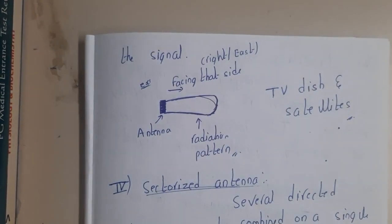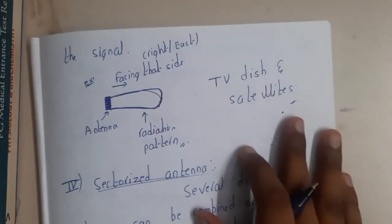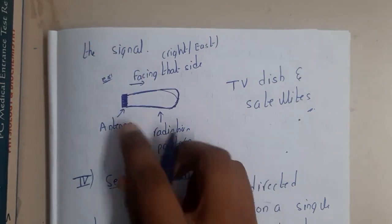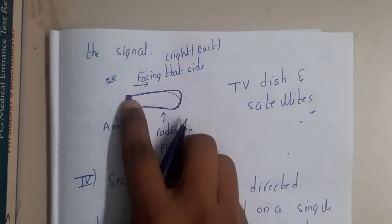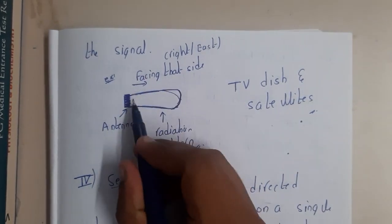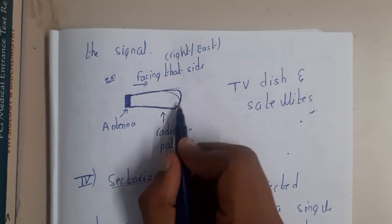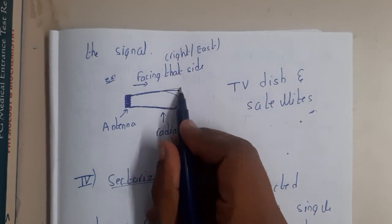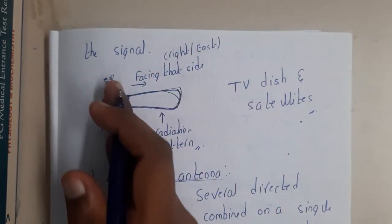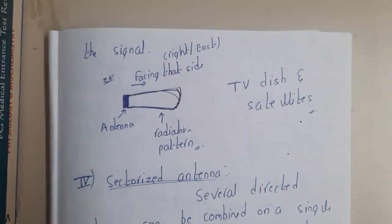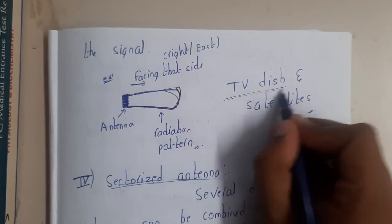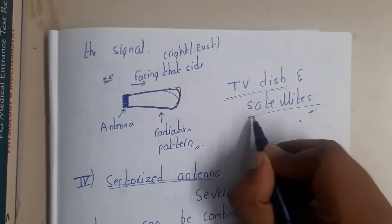Assume that this is an antenna. It is having a range like this, so anything inside this range it can receive or it can send the data. The best example for this is nothing but our TV dishes.